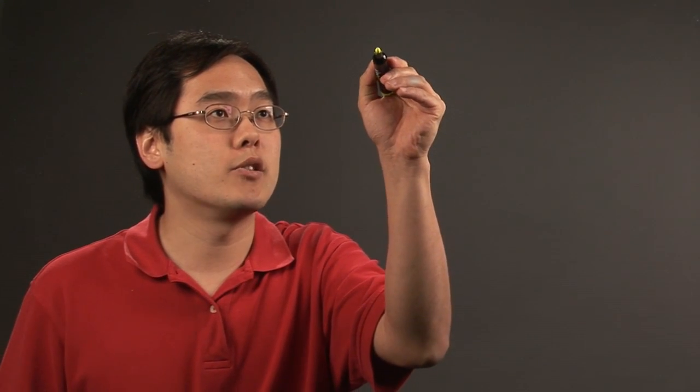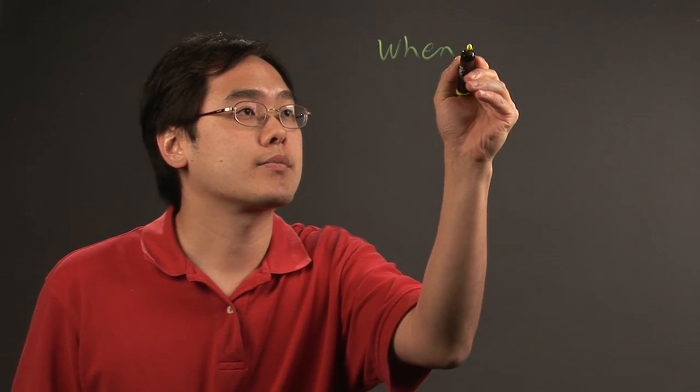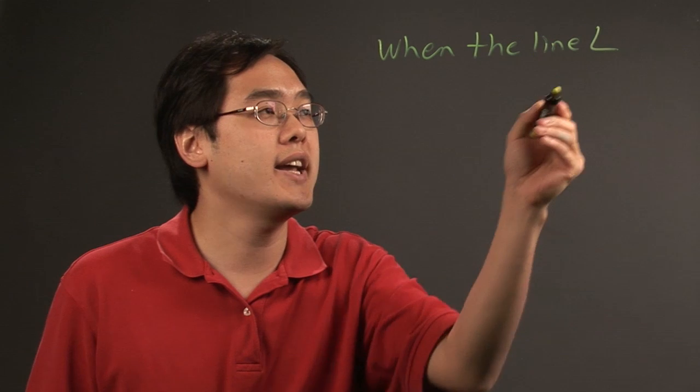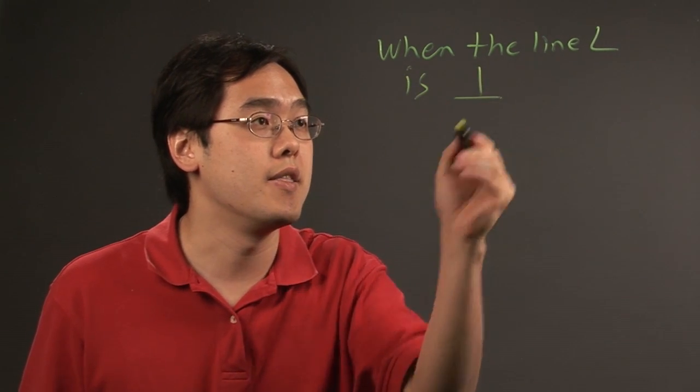So, a line is perpendicular to a plane when the line, let's call it L, when the line L is perpendicular—now, the notation for perpendicular is this.